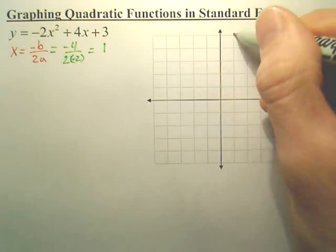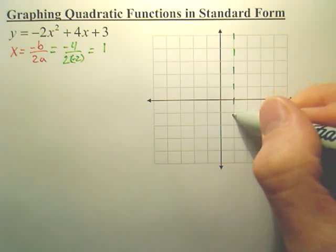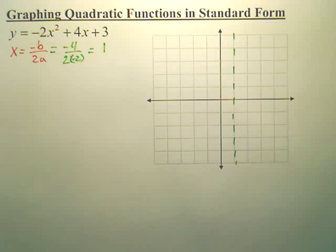So my axis of symmetry is right here at 1, meaning my parabola (because I know it's a parabola since it's x squared) is going to fold along that dotted line.